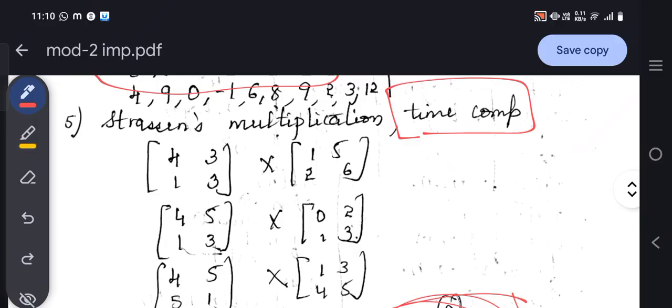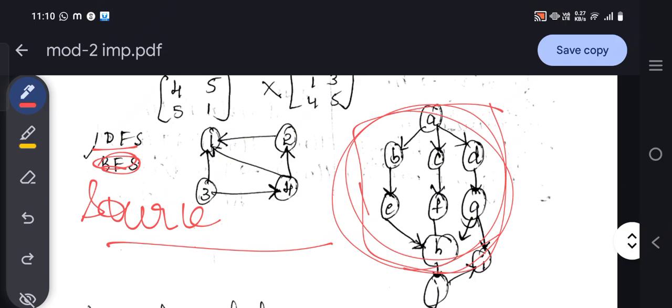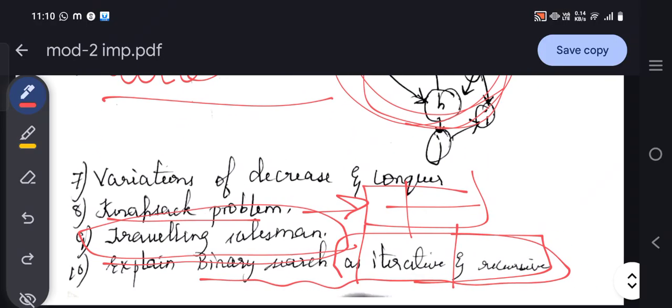Then comes the source removal and topological sort, which is also important. It's easy—you need not memorize anything. You just understand, you solve it, you'll get the answer. That's all. Done. It's easy.